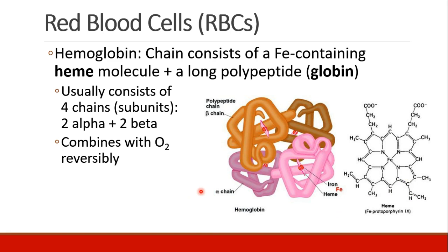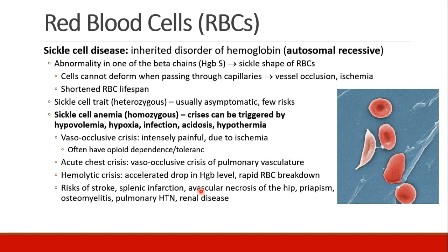These four subunits come together and are able to bind oxygen in a reversible fashion — that's how oxygen is transported. There are many different abnormalities of hemoglobin, including sickle cell disease and thalassemias. Sickle cell disease is an inherited disorder of hemoglobin transmitted in an autosomal recessive fashion. In these patients, there is an abnormality in one of their beta chains, and so it is called hemoglobin S.